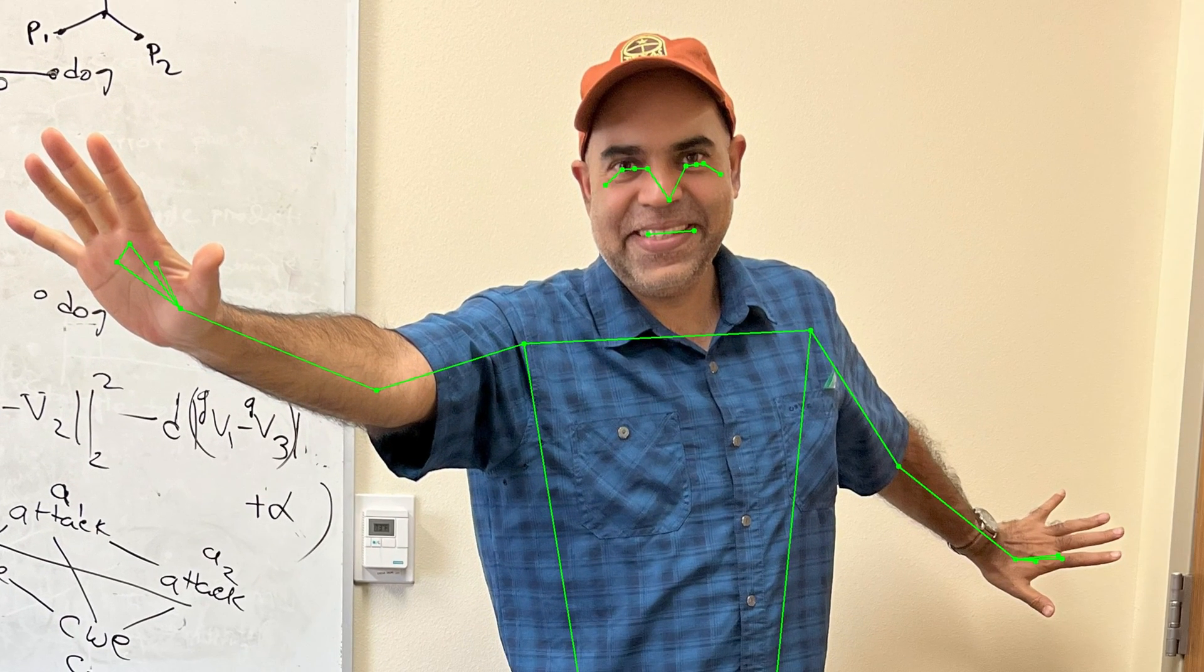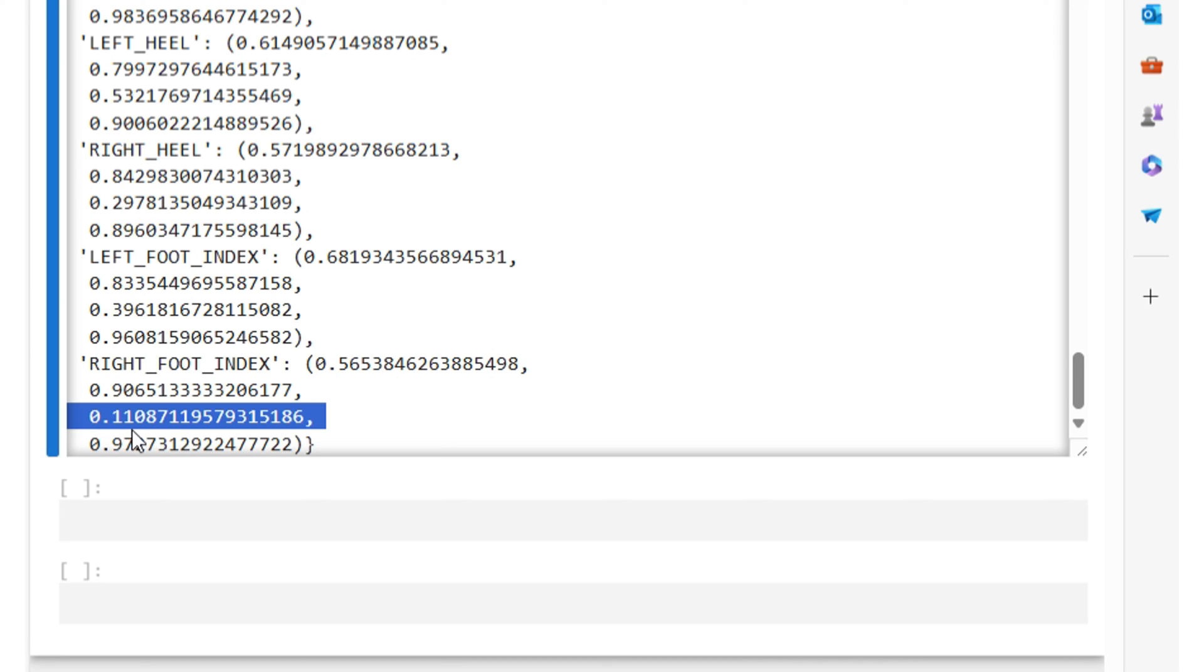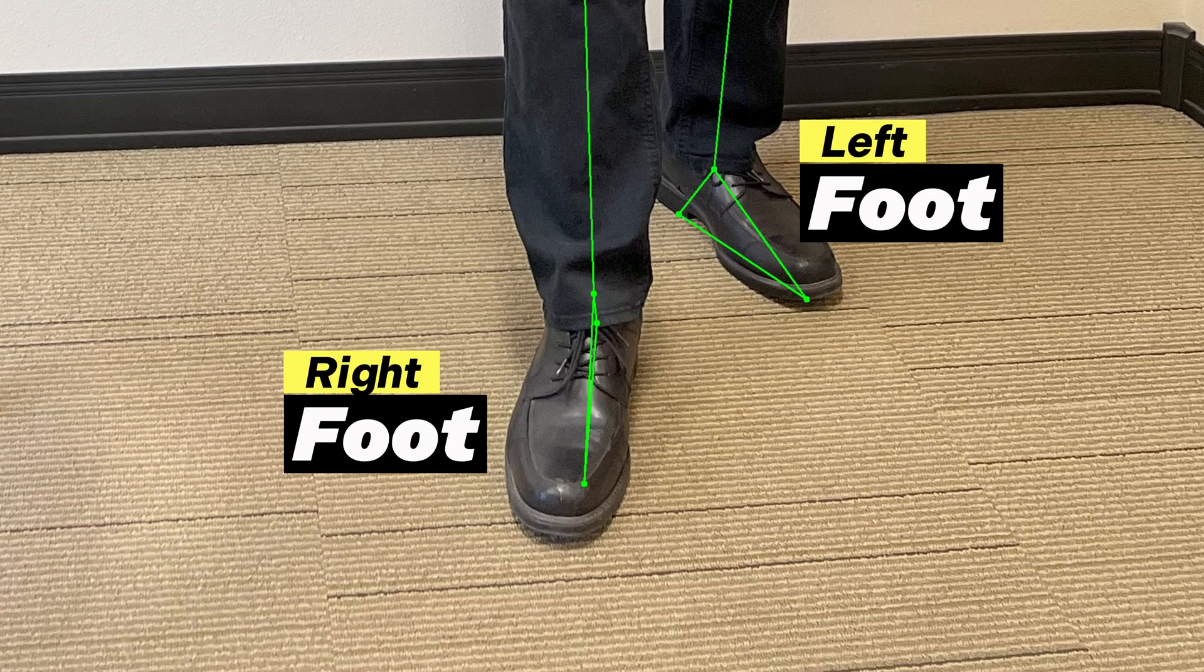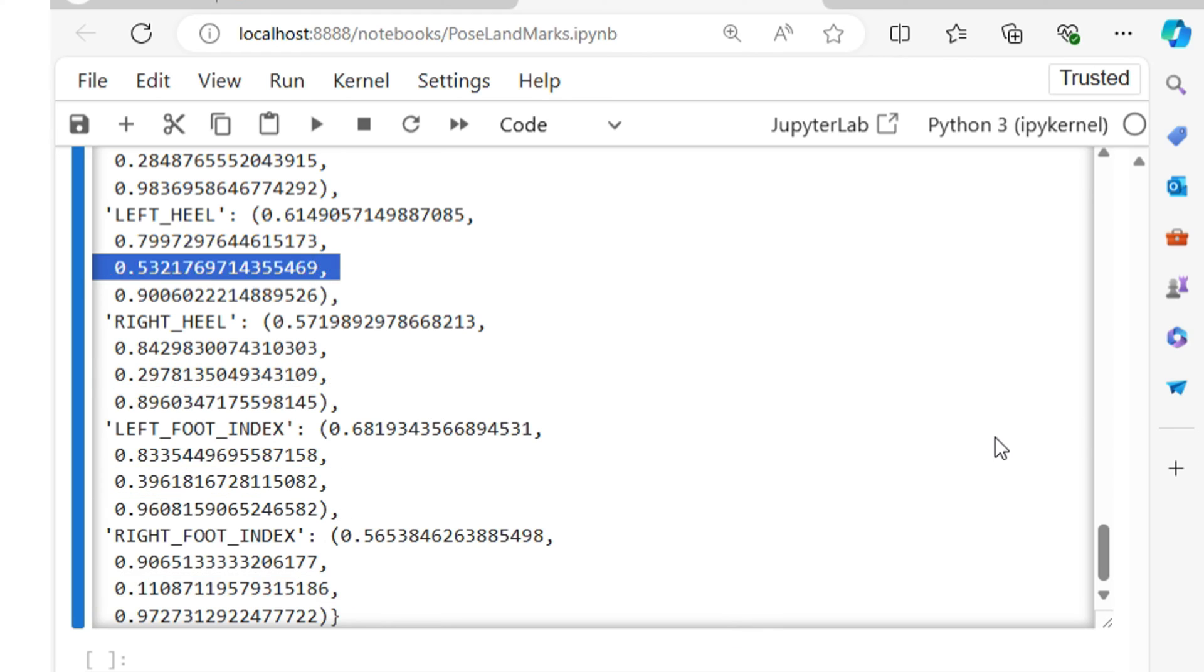Let us take a look at the foot. The right foot index has a smaller z value compared to the z value of the left foot index. That is, my right foot should be closer to the camera compared to my left foot. That is correct. These features become valuable in downstream applications.